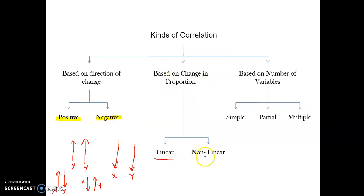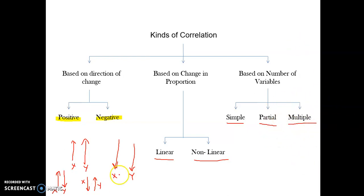Based on change in proportion, correlation can be linear or non-linear. Linear means the changes are proportionate — if one variable increases by one point, the other always increases by two points. Non-linear means there is no proportionate change. Based on the number of variables: simple means only two variables are under study; partial means multiple variables are involved but we study only two at a time — for example, studying rainfall and wheat production while keeping fertilizer and soil type constant; multiple correlation means studying all variables together at the same time.